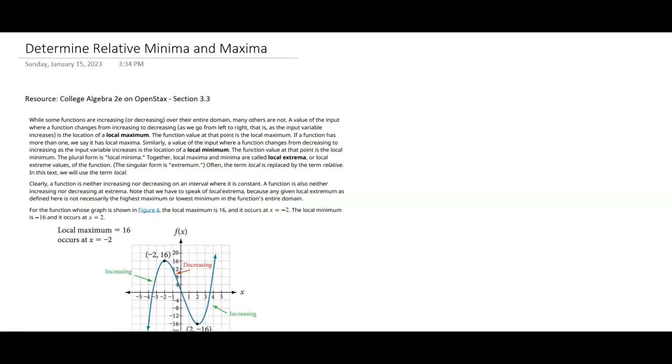Now that we've talked about increasing and decreasing, you can also look at relative maximum and minimum. So when a function changes from increasing to decreasing or decreasing to increasing, the function is changing direction. And because of that, you get what's called a local extrema.